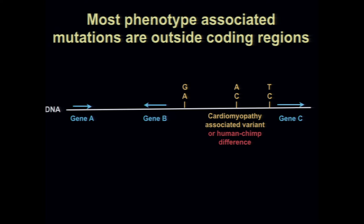We came to this from an evolutionary question of comparing humans and chimps, and our observation that the fastest evolving regions of the human genome have the genetic and epigenetic signatures of distal enhancers that function during development. This is also very relevant to the disease question. We've been asking ourselves: can we annotate where the enhancers are, where the distal regulatory elements are?